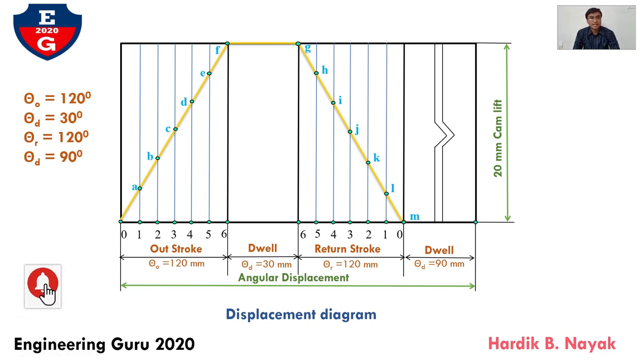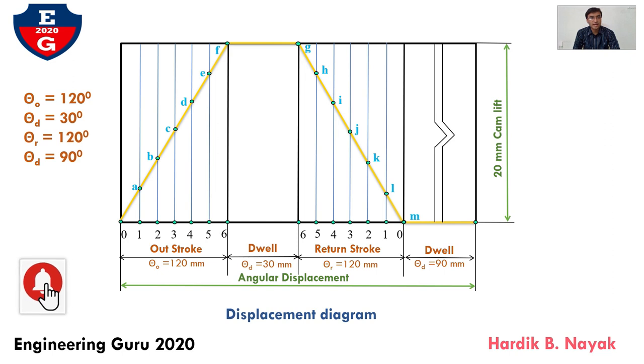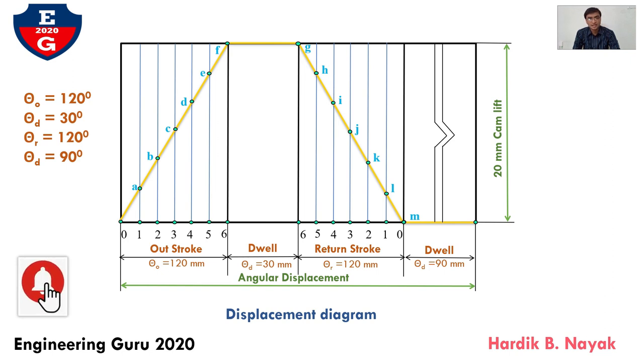The remaining 90 degrees remains at the bottom position, so draw a dark line indicating dwell for the remaining cycle.